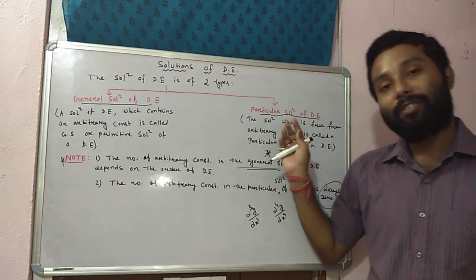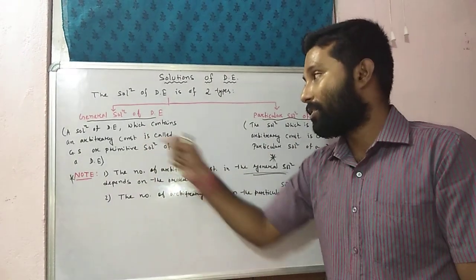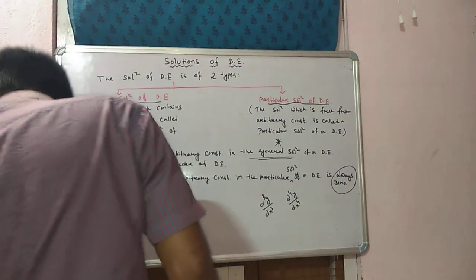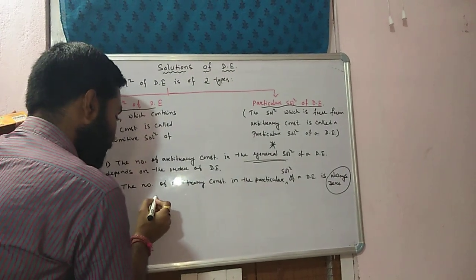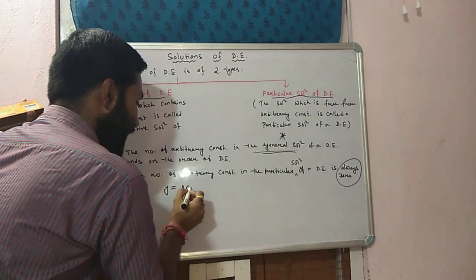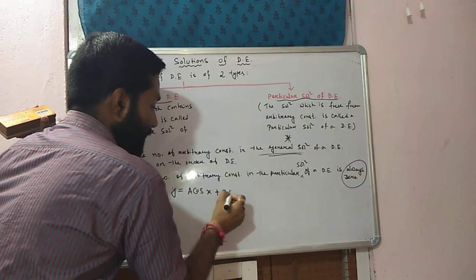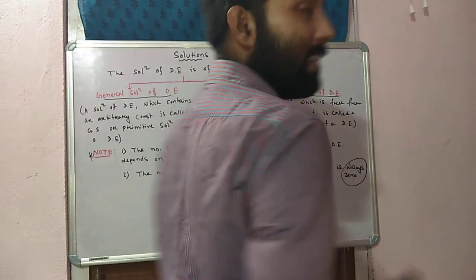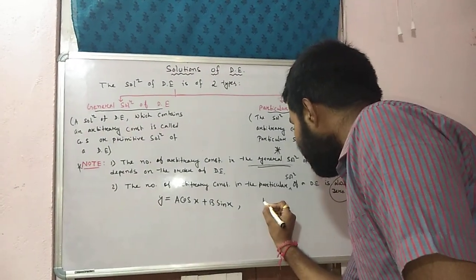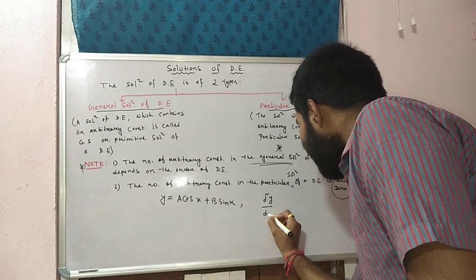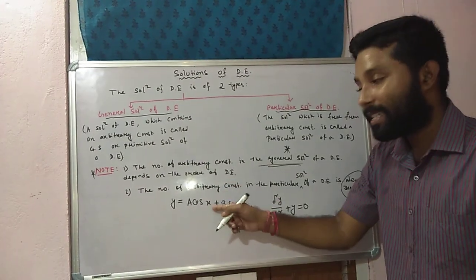So this is the difference between general solution and particular solution. Now I will give examples of both. Let us take one example: suppose y = a cos x + b sin x. This is a function.